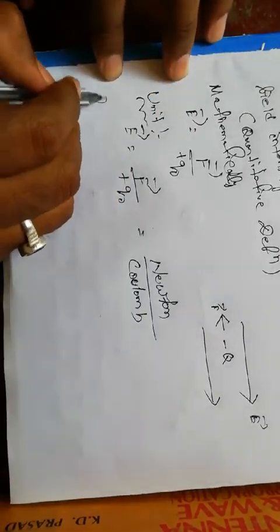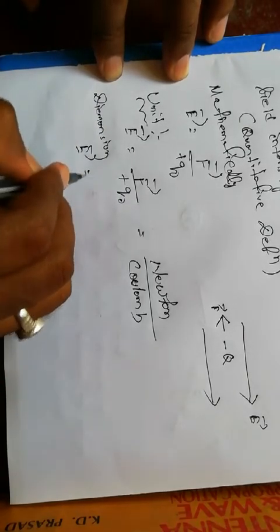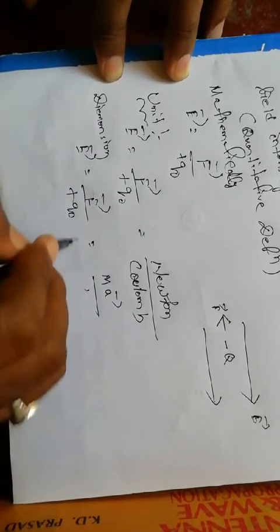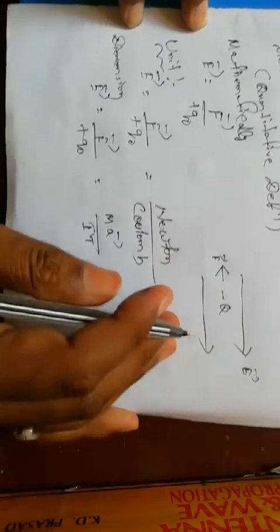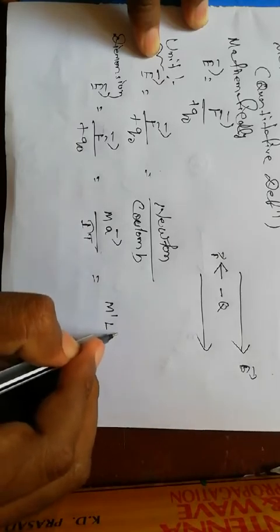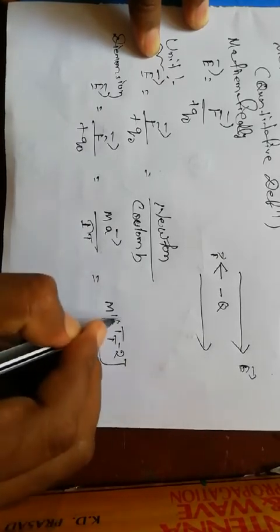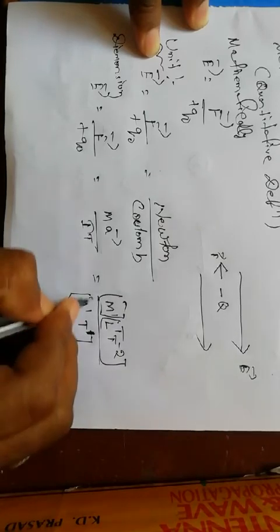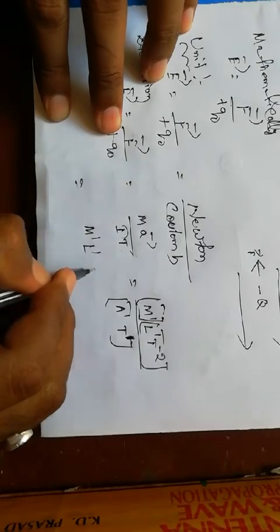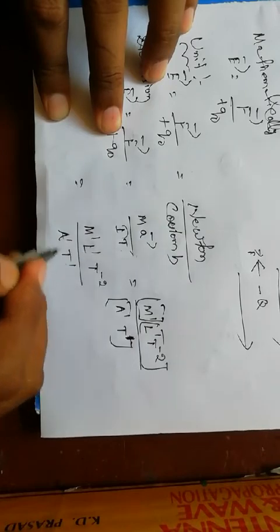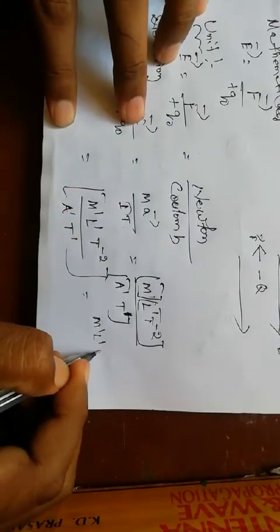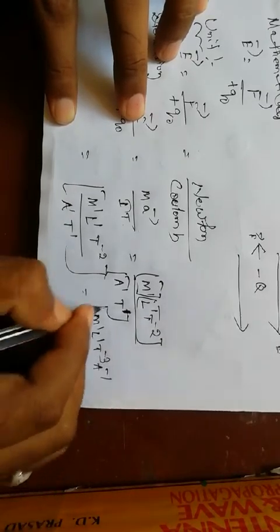What is the dimension of electric field? Electric field equals force divided by test charge, where force equals mass times acceleration, and charge q equals current times time (A·T). So the dimension is M¹L¹T⁻² divided by A¹T¹, giving M¹L¹T⁻² A⁻¹ T⁻¹, which simplifies to M¹L¹T⁻³ A⁻¹. That is the dimension of electric field intensity.